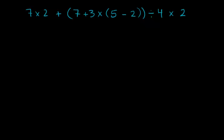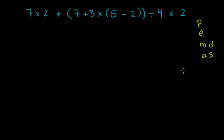Now that we've got the basics of order of operations out of the way, let's try to tackle a really hairy and beastly problem. We have all sorts of parentheses and numbers flying around. In any of these order of operations problems, just take a deep breath and remember: we do parentheses first, then exponents, then multiplication and division — they're at the same level — then addition and subtraction. Some people remember PEMDAS, but remember multiplication and division are at the same level, and addition and subtraction are also at the same level.